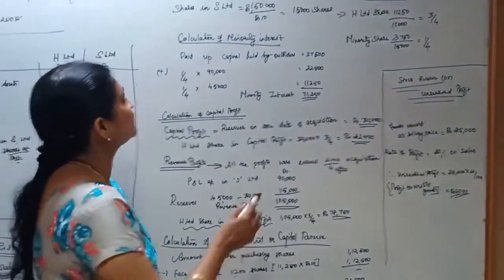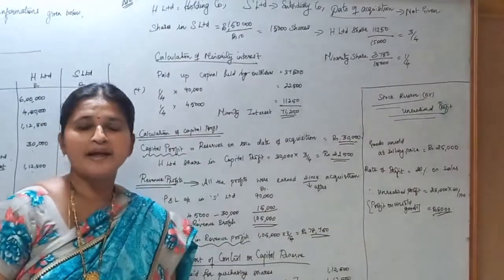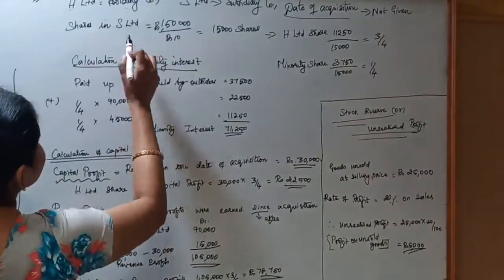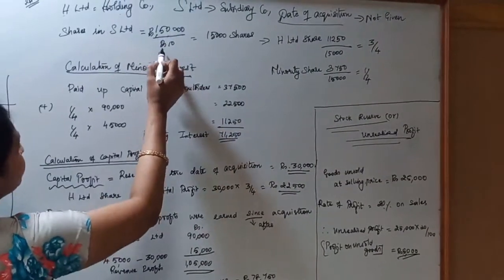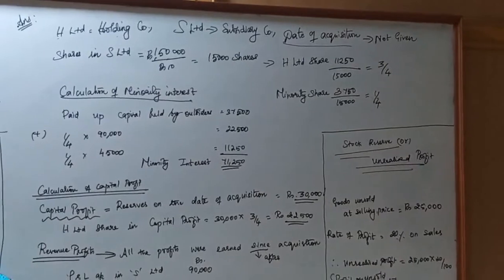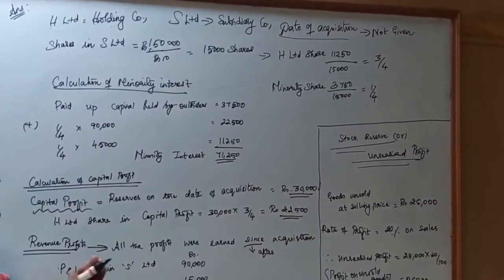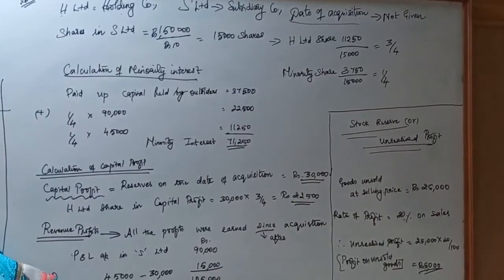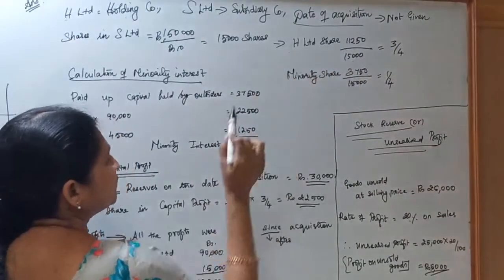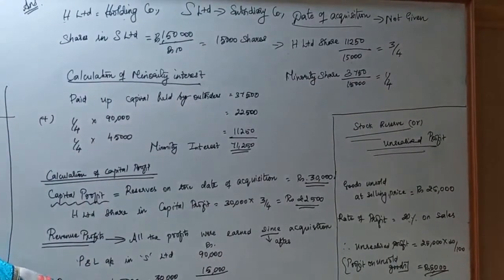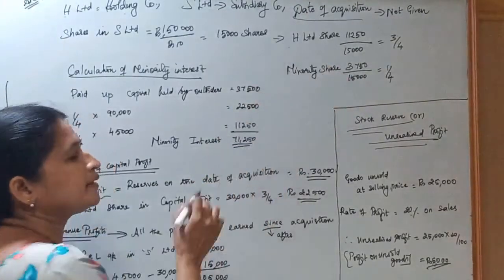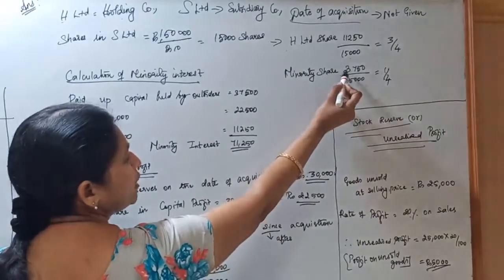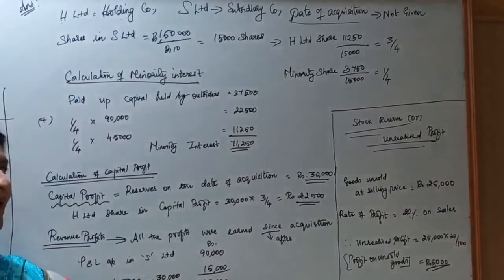Let us now look at the solution. H Limited is the holding company and S Limited is the subsidiary company. Date of acquisition is not given. Total shares in S Limited: Rs.1,50,000 divided by face value Rs.10 equals 15,000 shares. H Limited has purchased 11,250 shares, so 11,250 divided by 15,000 means H Limited's holding is three-fourths. Minority shareholders hold 3,750 shares, which is one-fourth.